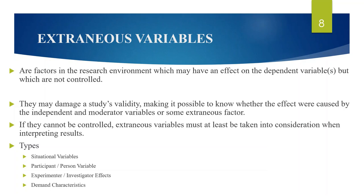Extraneous variables are those uncontrolled variables — that is, variables not manipulated by the experimenter — that may have a significant influence on the results of a study. Many research conclusions are questionable because of the influence of these extraneous variables. There are four types of extraneous variables. The first being situational variables: these are aspects of the environment that might affect the participant's behavior, like noise, temperature, or lighting conditions. Situational variables should be controlled so they are the same for all participants.